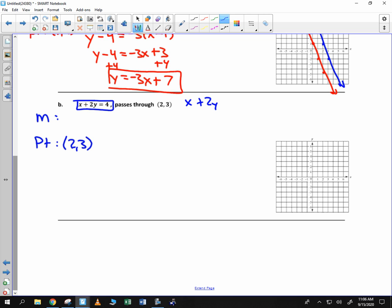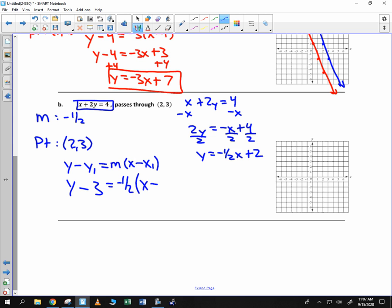x plus 2y is equal to 4. I will subtract the x. 2y is negative x plus 4. And then I divide by 2. y is negative 1 half x plus 2. That tells me the slope will be negative 1 half. You can now write y minus y1 is equal to m times x minus x1.